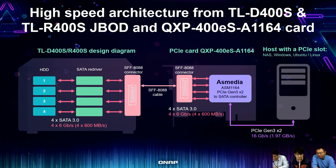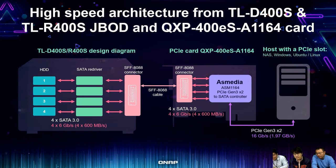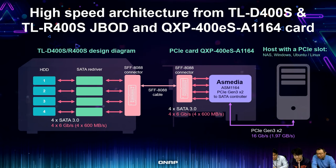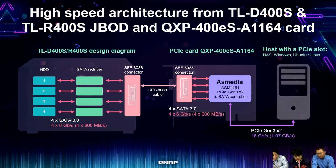Looking at the architecture one by one: for the four-bay design, the QXP four-port card uses a PCIe Gen 3 x2 interface giving 16 gigabit bandwidth to the host. Supporting four SATA drives at 6 gigabit each gives 24 gigabit from the drives, but at the host you still get 16 gigabit — almost 2 gigabytes per second maximum theoretical speed. The entry model already gives you over 10 gigabit speed.